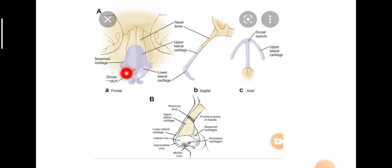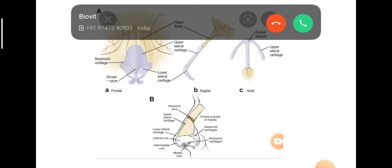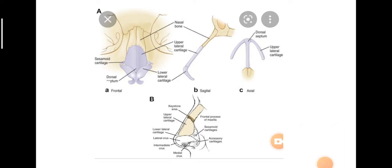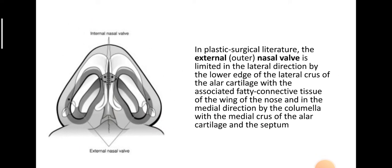The lower lateral cartilage has a lateral crus and a medial crus. The upper edge of the lateral crus of the lower lateral cartilage curls around the lower edge of the upper lateral cartilage, and this is called the scroll area. In plastic surgery literature, the external nasal valve is limited in the lateral direction by the lower edge of the lateral crus of the lower lateral cartilage.